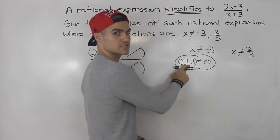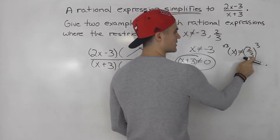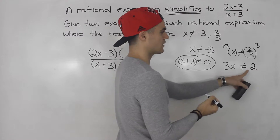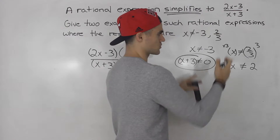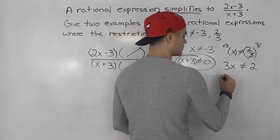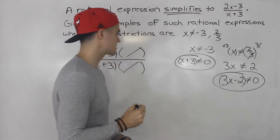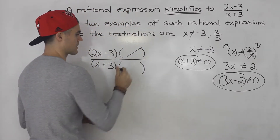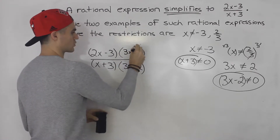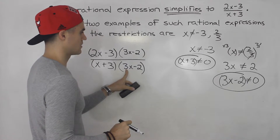Usually we don't have fractions in the factors, so what we have to do is multiply both sides by 3 to get rid of the denominator. When we do that we end up with 3x cannot equal 2. So 3x cannot equal 2 is the same as x cannot equal 2 over 3 — because we multiplied both sides by 3, the 3s cancel out, then we bring the 2 over. So we end up with 3x minus 2 as the factor.